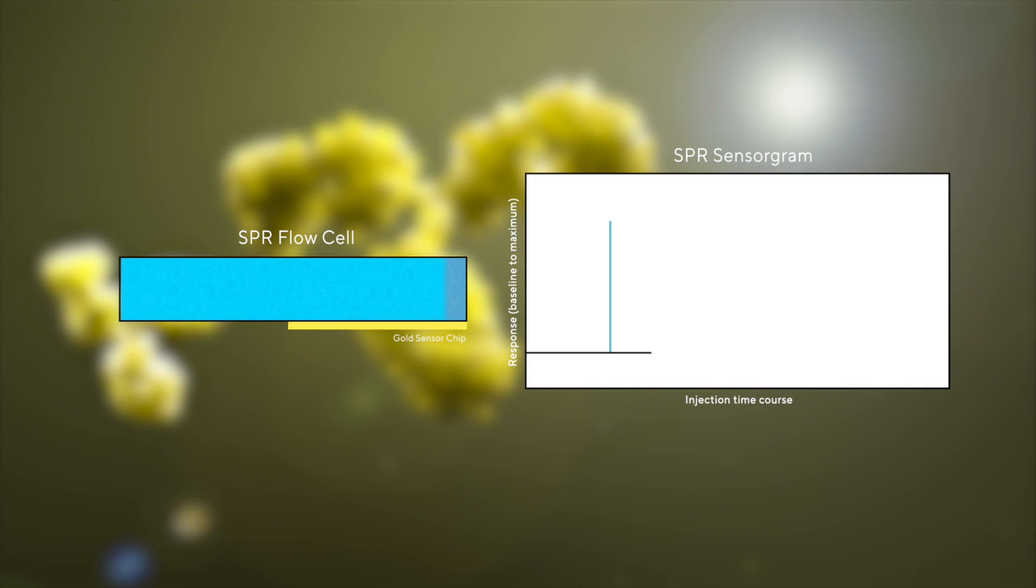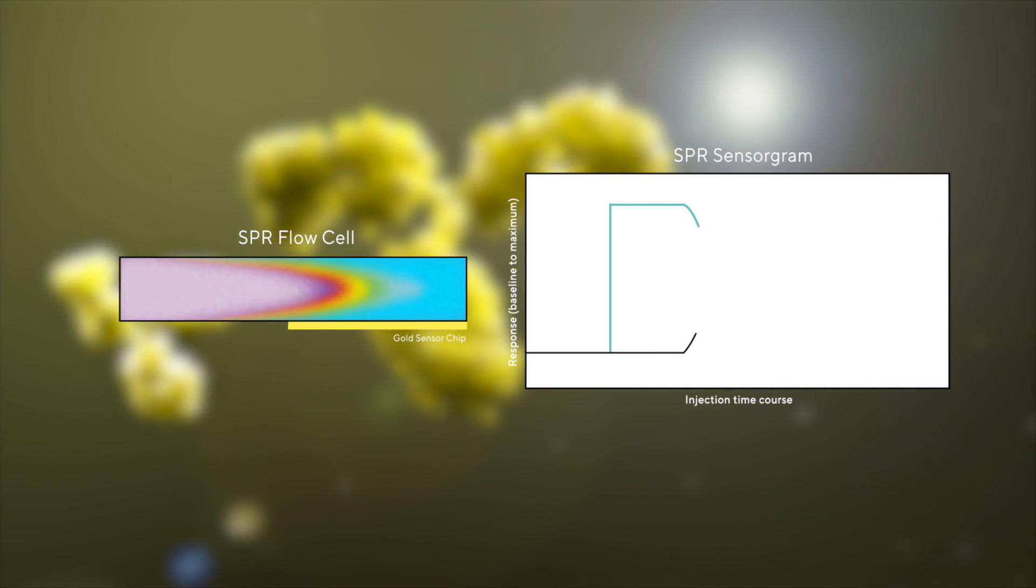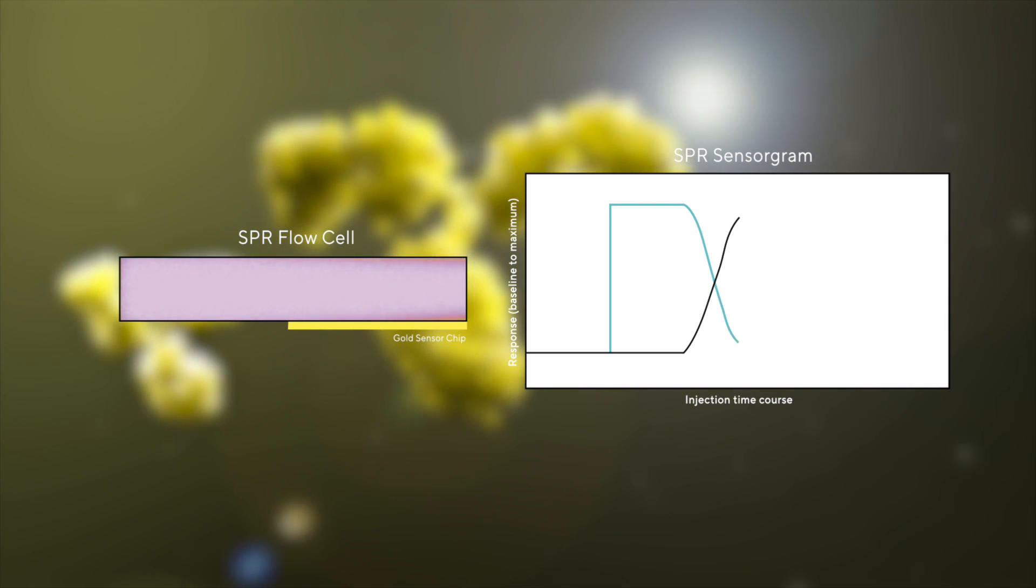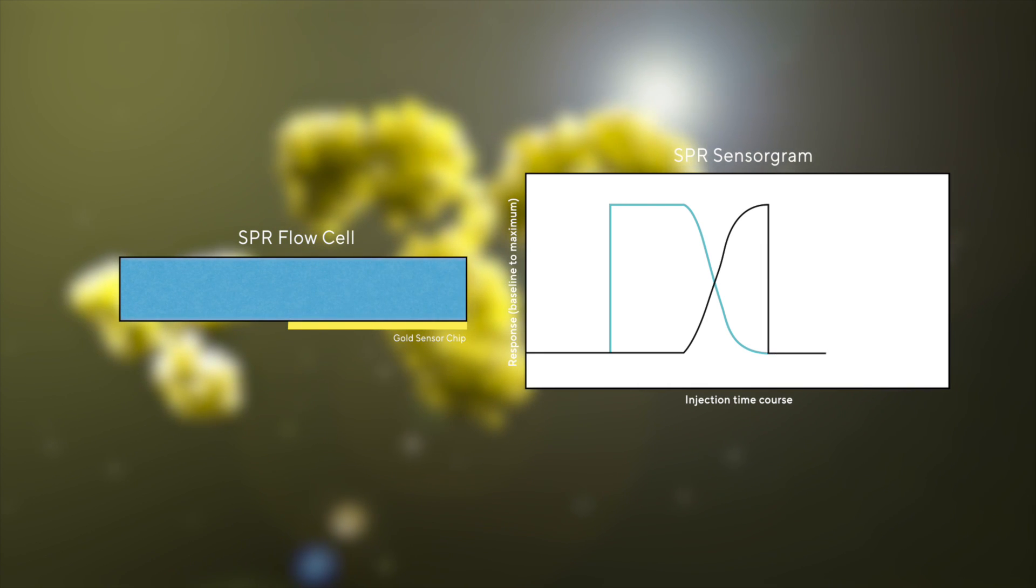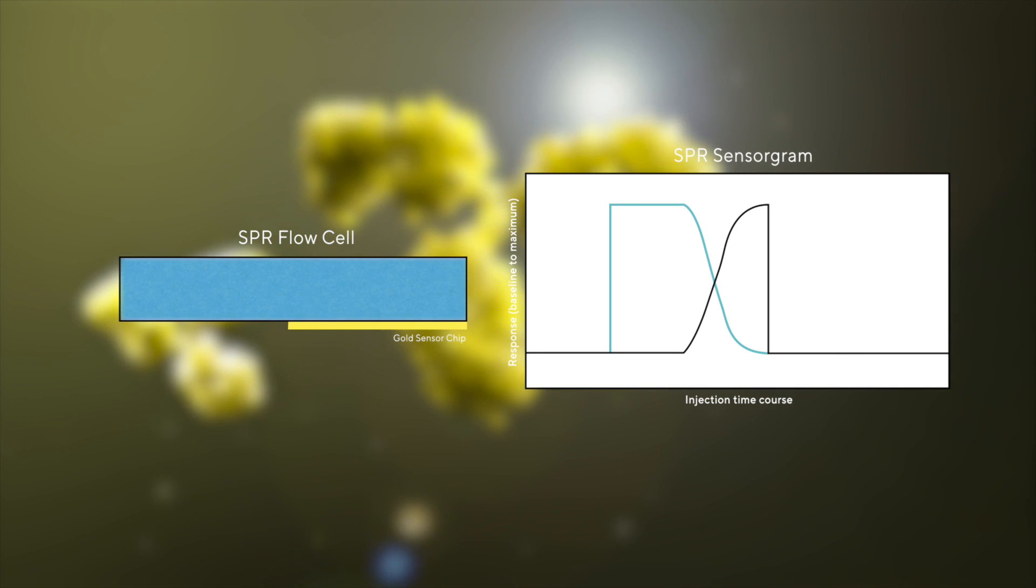An alternative buffer, analyte or competitor molecule is injected immediately before your primary analyte, allowing you to systematically assess various physiological conditions. This can include varying pH or chemical composition during real-time binding, or the rapid screening of multiple buffers and compounds, all achievable with a single running buffer.